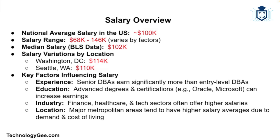Now let's talk about how much money DBAs make. The average annual salary for a database administrator in the U.S. is approximately $100,000. Salaries can vary based on factors such as experience, education, industry, and location. For instance, DBAs in Washington D.C. tend to earn an average of about $114,000 per year, while those in Seattle, Washington make about $110,000 annually. The U.S. Bureau of Labor Statistics reports a median annual income of about $102,000 for database administrators.